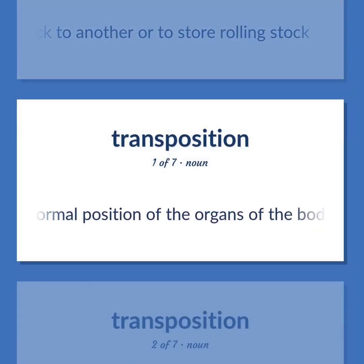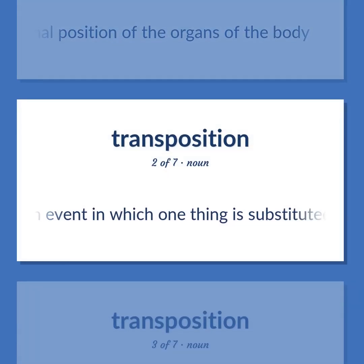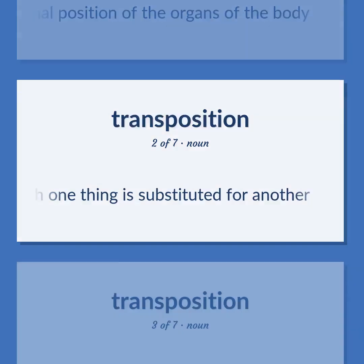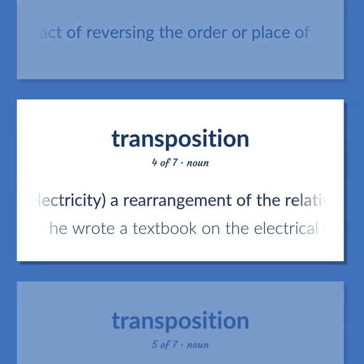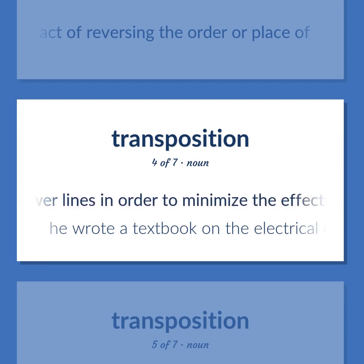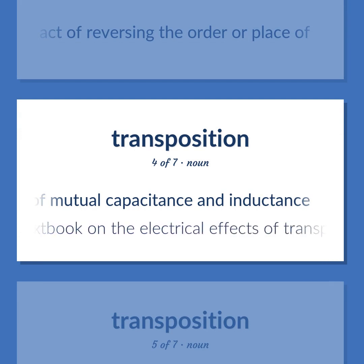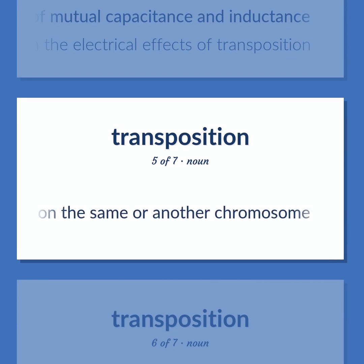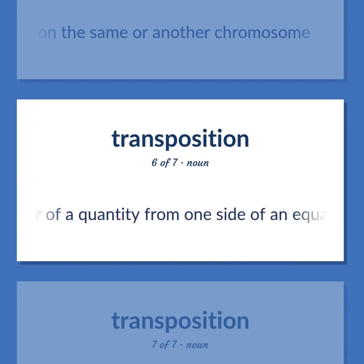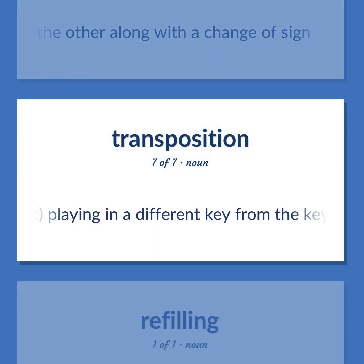Transposition: Any abnormal position of the organs of the body. An event in which one thing is substituted for another. The act of reversing the order or place of. Electricity: a rearrangement of the relative positions of power lines in order to minimize the effects of mutual capacitance and inductance. He wrote a textbook on the electrical effects of transposition. Genetics: a kind of mutation in which a chromosomal segment is transferred to a new position on the same or another chromosome. Mathematics: the transfer of a quantity from one side of an equation to the other along with a change of sign. Music: playing in a different key from the key intended, moving the pitch of a piece of music upwards or downwards.